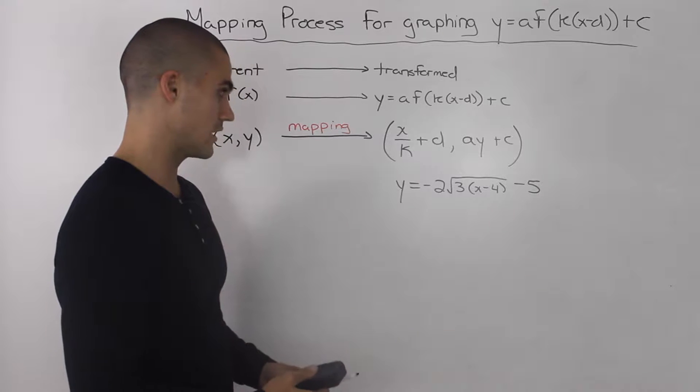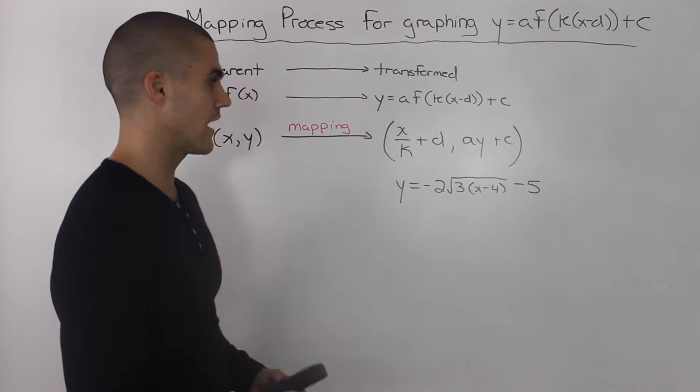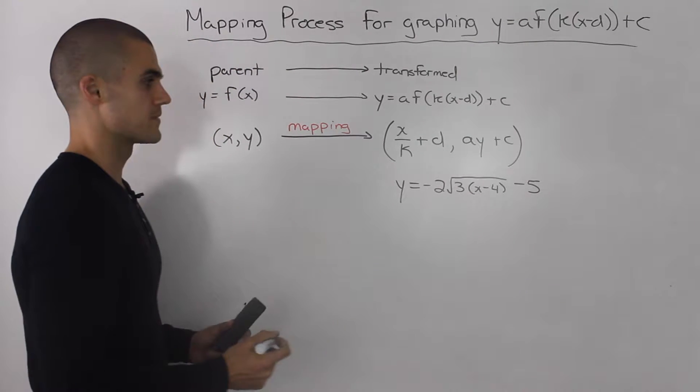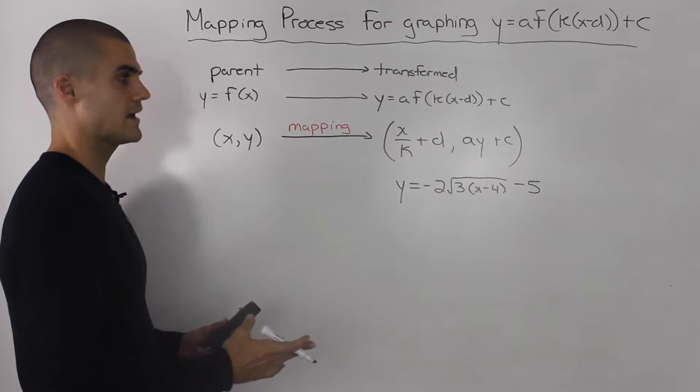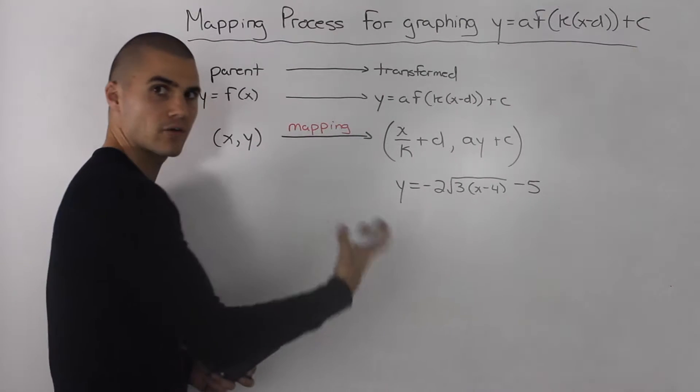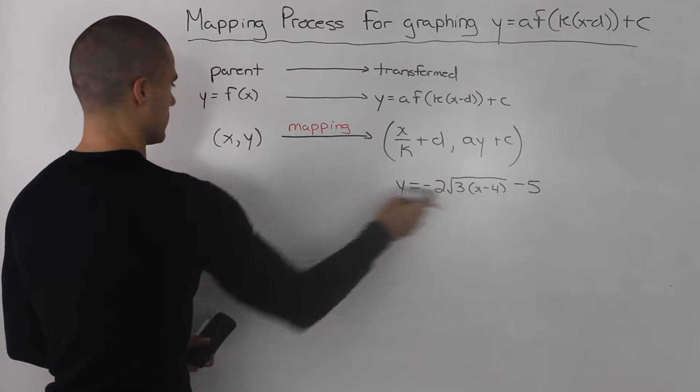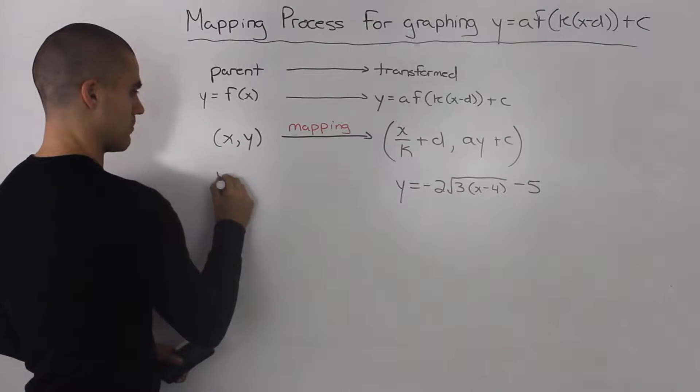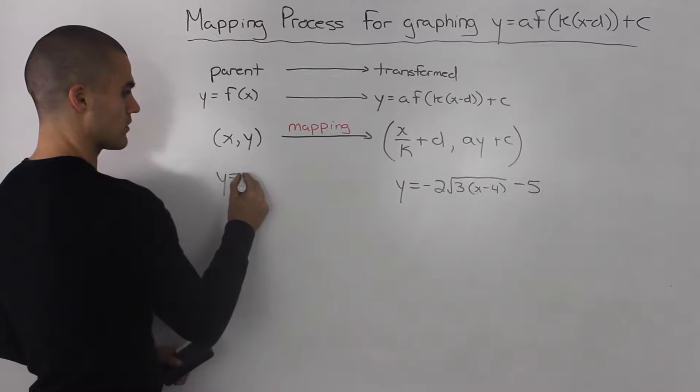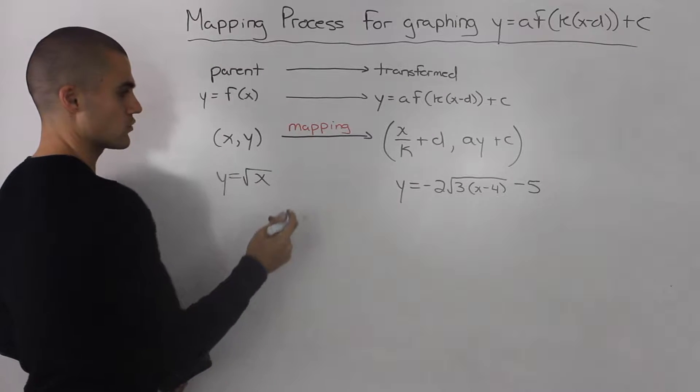Let's go through a couple of steps to graph it. The first step is you want to recognize what is the parent function of the transform function. If you can't tell yet, the parent function that we're working with is the square root of x.